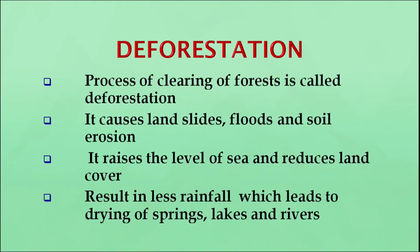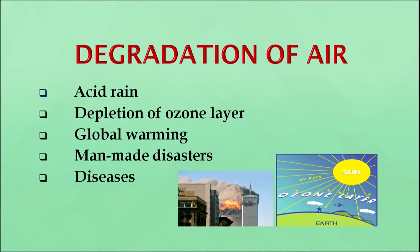Deforestation. The process of clearing of forests is called deforestation. It causes landslides, floods and soil erosion. It also raises the level of the sea and reduces the land cover. It also results in less rainfall which leads to drying of springs, lakes and rivers. Degradation of the air can be seen via acid rain, depletion of the ozone layer, global warming, man-made disasters and diseases.